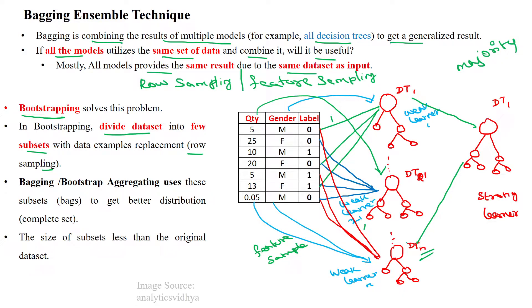The strong learner will use an approach like majority voting. Suppose one more model also has sample number 1 — that model is also sending the output for sample number 1. The actual output of sample number 1 is zero.